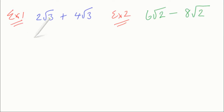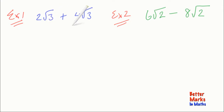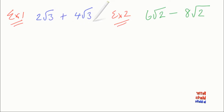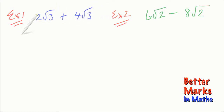Welcome to this lesson on how to add surds. Adding surds is a little bit like adding like terms in algebra, and you can only add surds that are like surds. Like surds are ones where it doesn't really matter what the number in front of them is — the key thing is the number under the square root. So root 3 and root 3 means that 2 root 3 and 4 root 3 are like surds, and all you have to do is this.